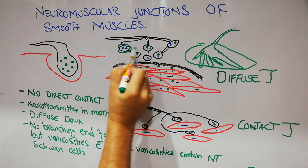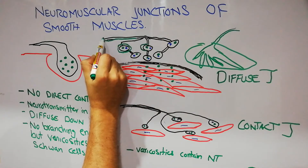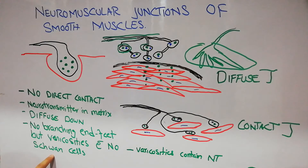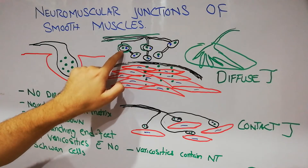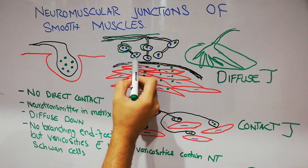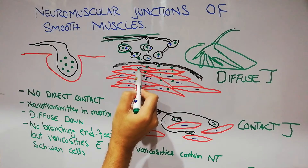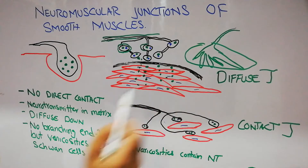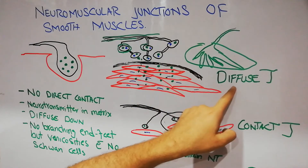The neurotransmitter is secreted from the varicosities because that area lacks Schwann cells. Schwann cells normally cover nerve fibers and facilitate the speed of nerve impulse transmission. Their absence at the varicosities allows the transmitter to be secreted and diffuse deep inside to excite the smooth muscles. This is the case in the diffuse type of neuromuscular junction.